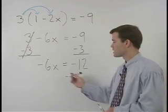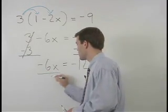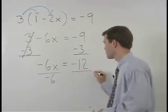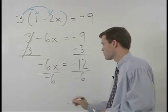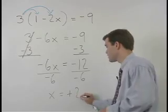To get x by itself, we divide both sides by negative 6 and x equals positive 2.